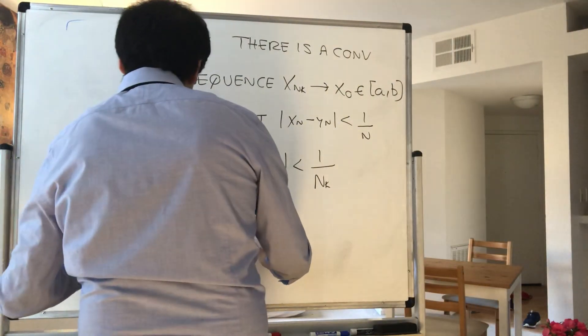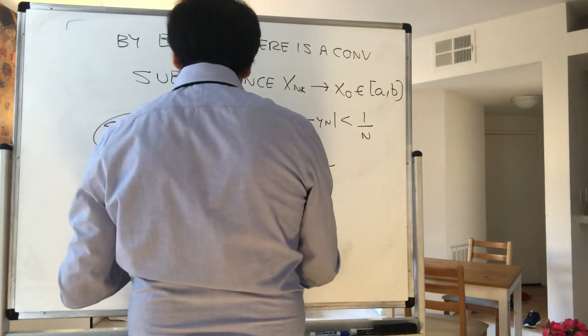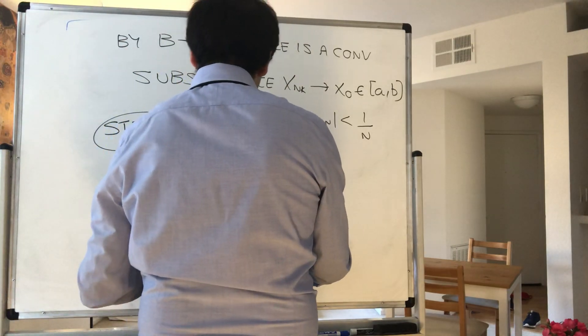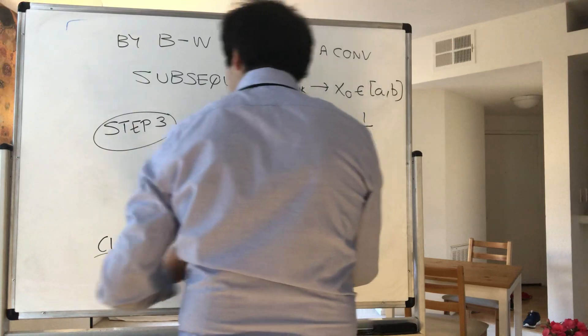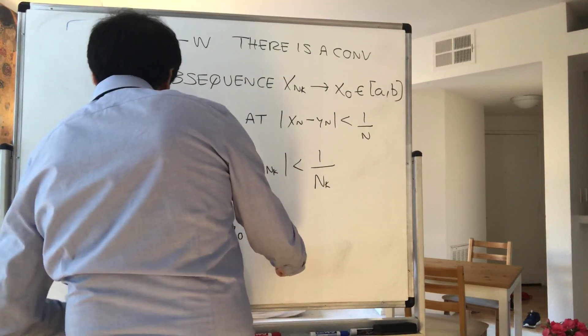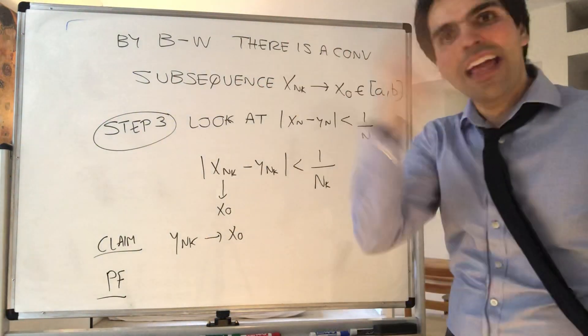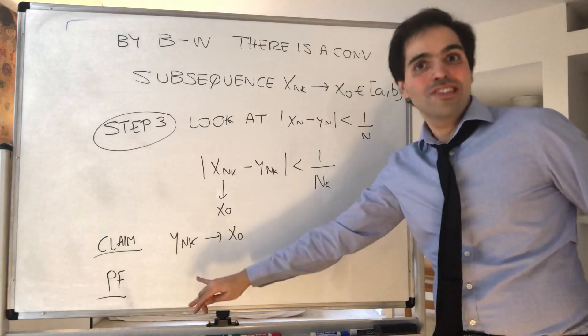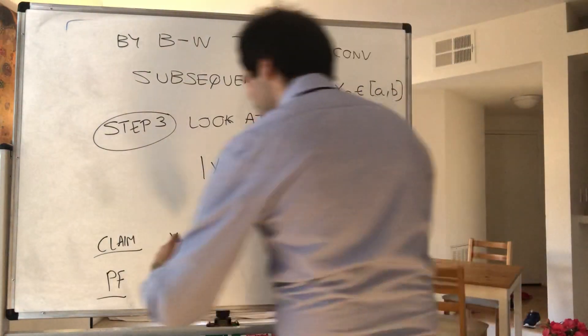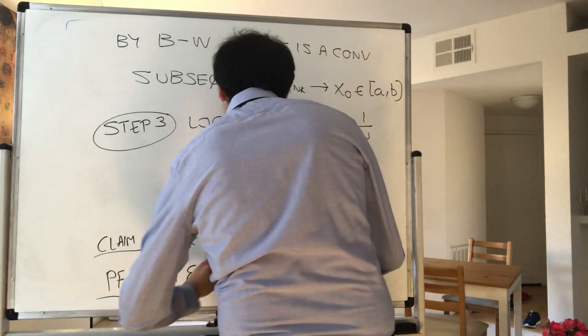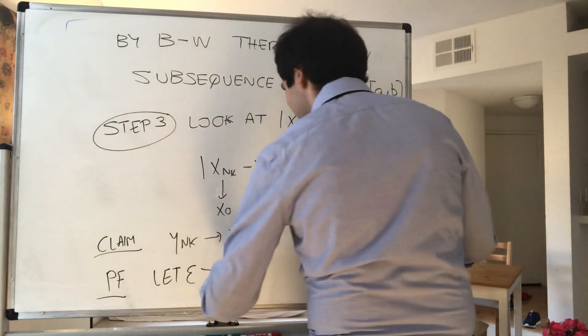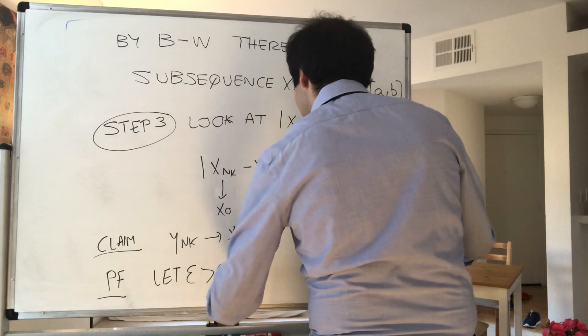So claim: we get that y_nₖ goes to x₀. And here's the proof. I know we have an epsilon before, but let's just let epsilon be greater than 0. I don't want to write epsilon primes or anything. So let ε > 0 be given.